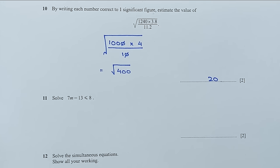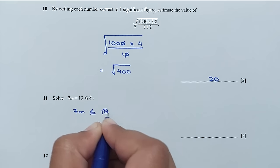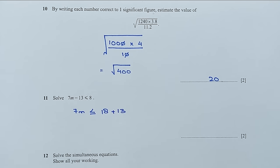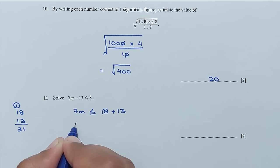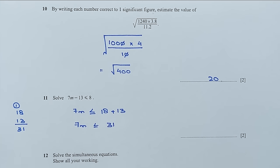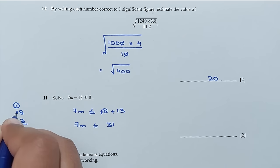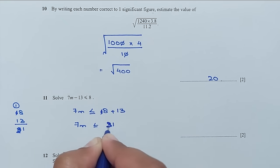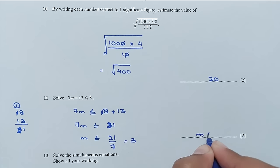Question number 11: solve the inequality 7M ≤ 8 plus 13. So 8 plus 13 is 21. Therefore 7M ≤ 21, so M ≤ 21 divided by 7, which equals 3. So M is less than or equal to 3.